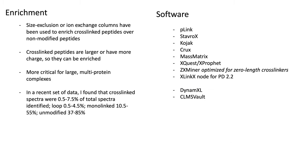After crosslinking, it's often a good idea to do some sort of an enrichment step. This includes size exclusion or ion exchange chromatography, which are used to enrich the crosslinked peptide over non-modified peptides. These enrichment steps are very critical, especially for large protein complexes, because the number of crosslinked peptides as opposed to non-crosslinked peptides is very small. Without the enrichment, it's very difficult to identify and detect the crosslinked peptides. Because these peptides tend to be larger and have more charge, they can be enriched using either size exclusion or ion exchange chromatography.